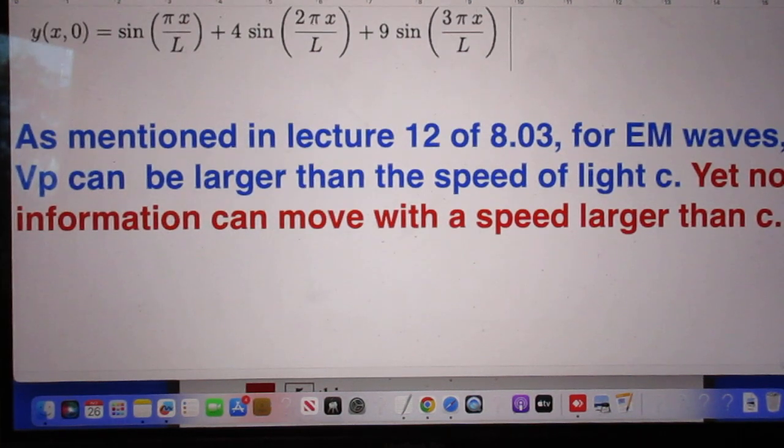As mentioned in lecture 12 of 803, for electromagnetic waves, the phase velocity can be larger than the speed of light c. Yet no information can move with a speed larger than c.